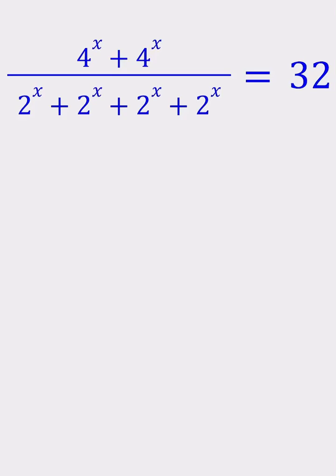Hello everyone. To solve this exponential equation, there are a couple of ways we can approach it. The first one is we can write the numerator as 2 times 4^x and the denominator as 4 times 2^x, and that equals 32.